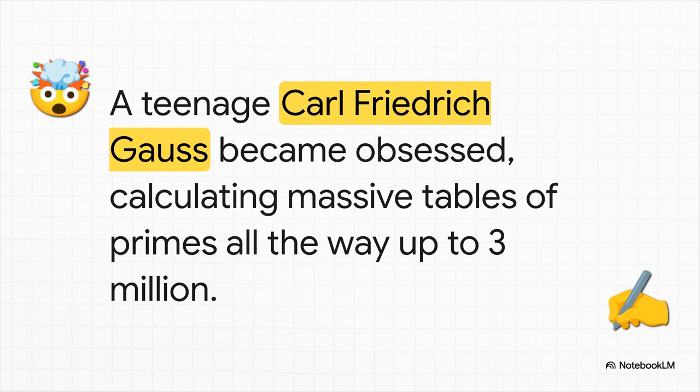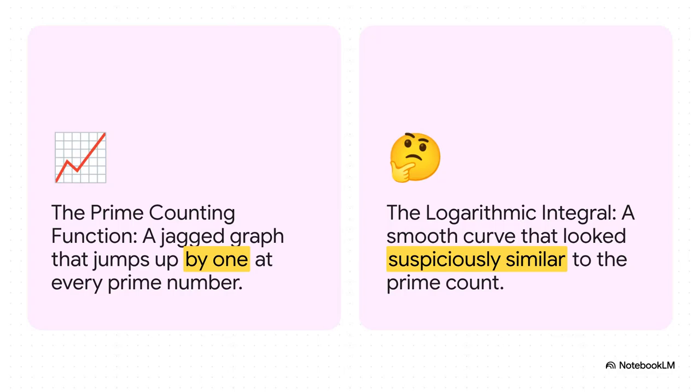So, our first detective on the case was this teenage prodigy, Carl Friedrich Gauss. And he became completely obsessed with finding some order in this chaos. I mean, he painstakingly calculated huge tables of prime numbers, all the way up to 3 million, just searching for some kind of pattern. And Gauss found something pretty incredible. He graphed the number of primes he'd found, which created this jagged, staircase-like function you see on the left. Then he compared it to this totally different, much smoother function called the logarithmic integral. And somehow, unbelievably, the two graphs were an almost perfect match. It was this stunningly accurate approximation, a giant clue that there was some deep, hidden order to the primes after all.